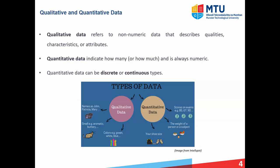Let us look at some more examples of qualitative and quantitative data. Qualitative or categorical data refers to non-numeric data, which can be used to describe qualities, characteristics, or attributes. The graphic image below shows some examples, a person's name, a smell, which is an attribute or characteristic, and the color of something.